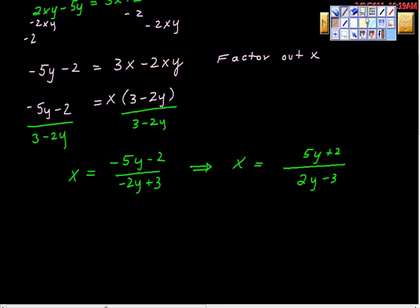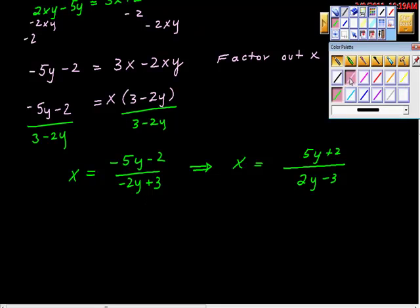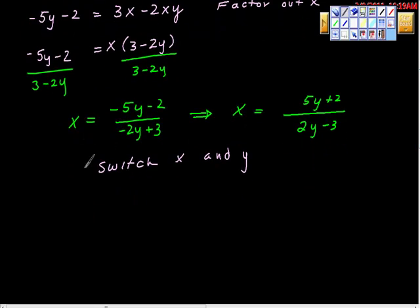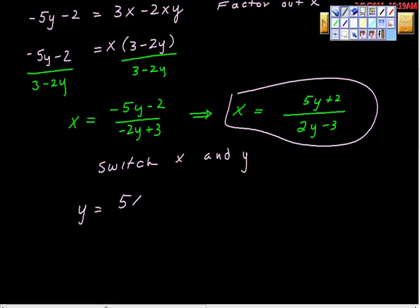And then, of course, now, finally, the next step is switch x and y. Same process we've been using here. So instead of having x equals this thing, we'll just switch x and y. So we have y equals 5x plus 2 over 2x minus 3. So then, of course, we have to switch this back out here because this is the inverse. This is the inverse of f.